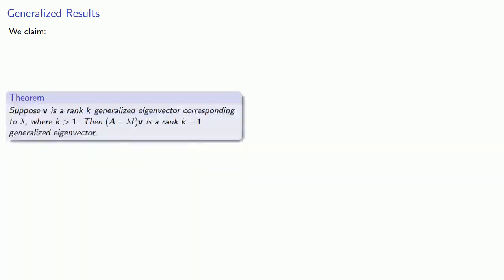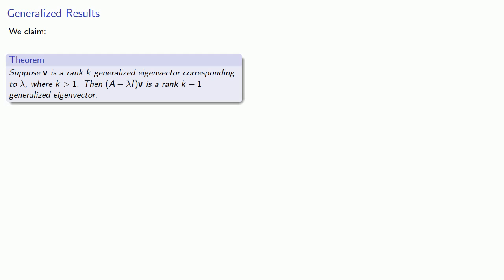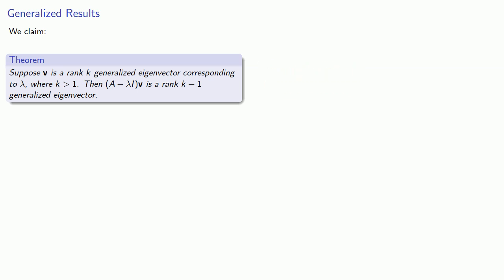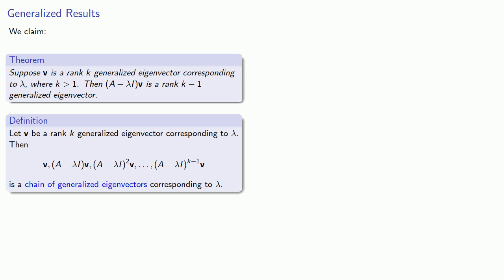The theory of generalized eigenvectors is very similar to the theory of eigenvectors in general, and we have a number of results that follow more or less immediately. Suppose v is a rank k generalized eigenvector corresponding to lambda, where k is greater than 1. Then (A minus λI) applied to v is a rank k minus 1 generalized eigenvector. This means we can produce another generalized eigenvector by applying (A minus λI) repeatedly. If v is a rank k generalized eigenvector corresponding to lambda, then v, (A minus λI)v, (A minus λI)²v, and so on up to (A minus λI)^(k-1)v is a chain of generalized eigenvectors corresponding to lambda.